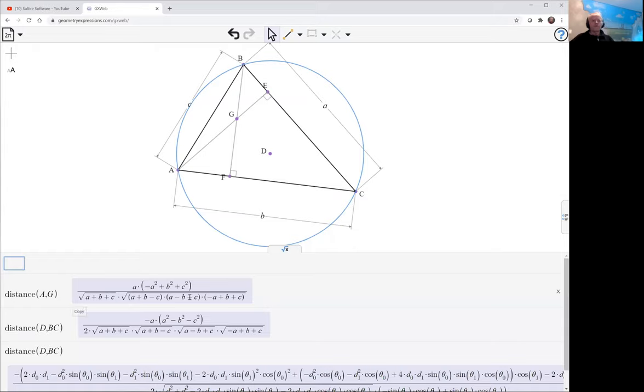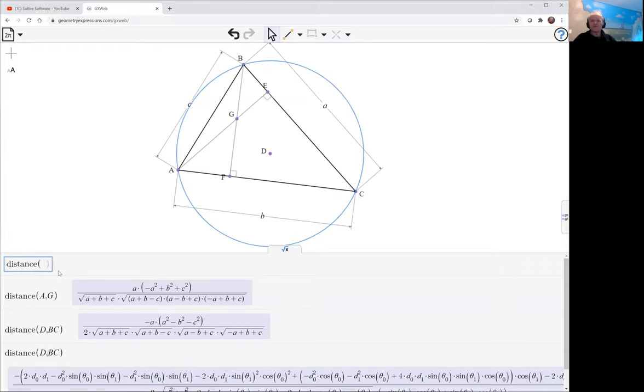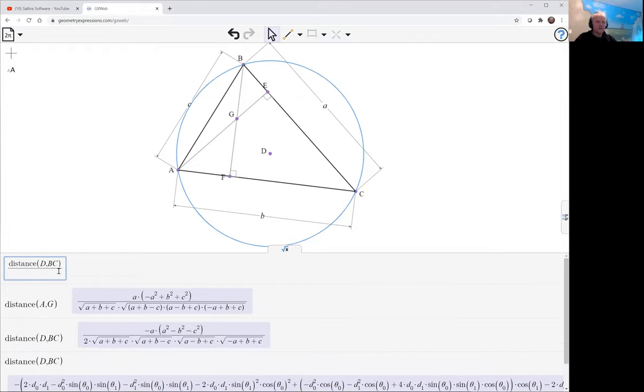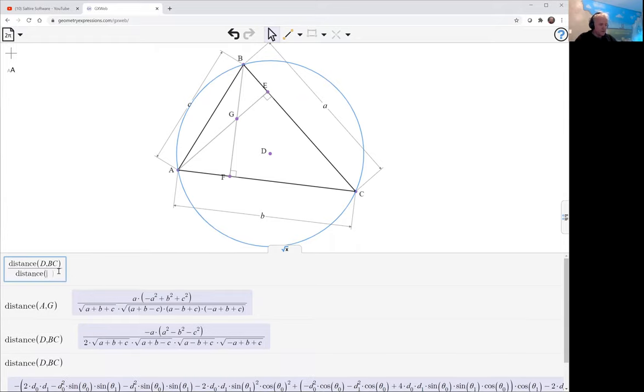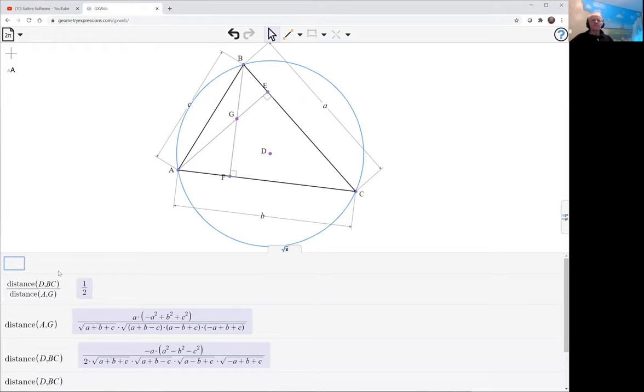Well, we could identify that the second is half of the first, but let's just have GeoGebra do that identification for us: distance from D to BC divided by distance from A to G. And you see, that's a half, which is what we were looking for.